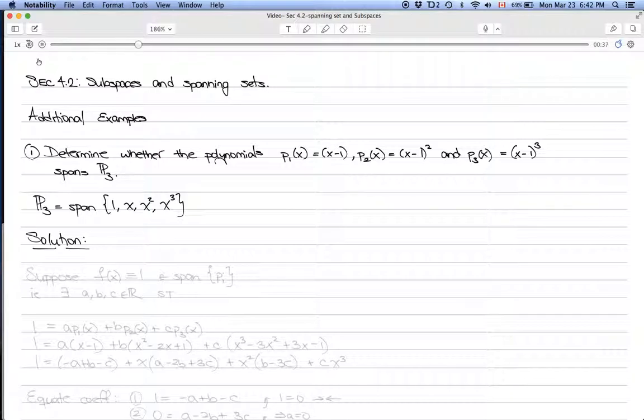To show that the vectors p1, p2, and p3 span P3, we need to show that every vector in the span of {1, x, x², x³} can be written as a linear combination of p1, p2, and p3. Let's go ahead and try to do that.